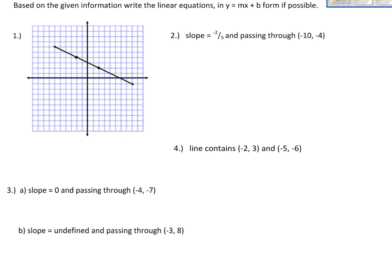Benchmark 0-4 for geometry asks us to write equations of different lines in the form y equals mx plus b, given different information. The slope is m, and the y-intercept is b — that's where the line crosses the y-axis.